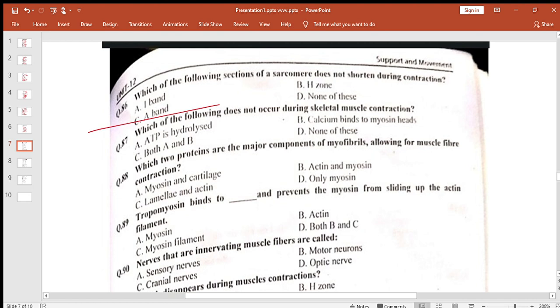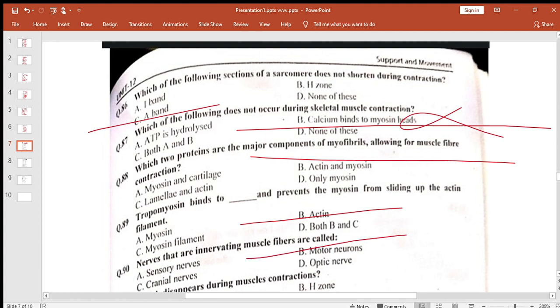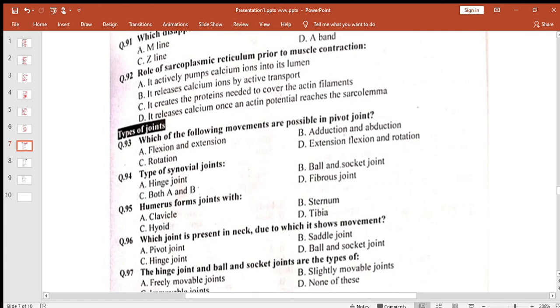Which of the following does not occur during skeletal muscle contraction? Calcium binds to myosin. Which two proteins are the major components? Actin and myosin. Tropomyosin binds to actin and prevents the myosin. Now, integrating muscle fiber: motor neuron.